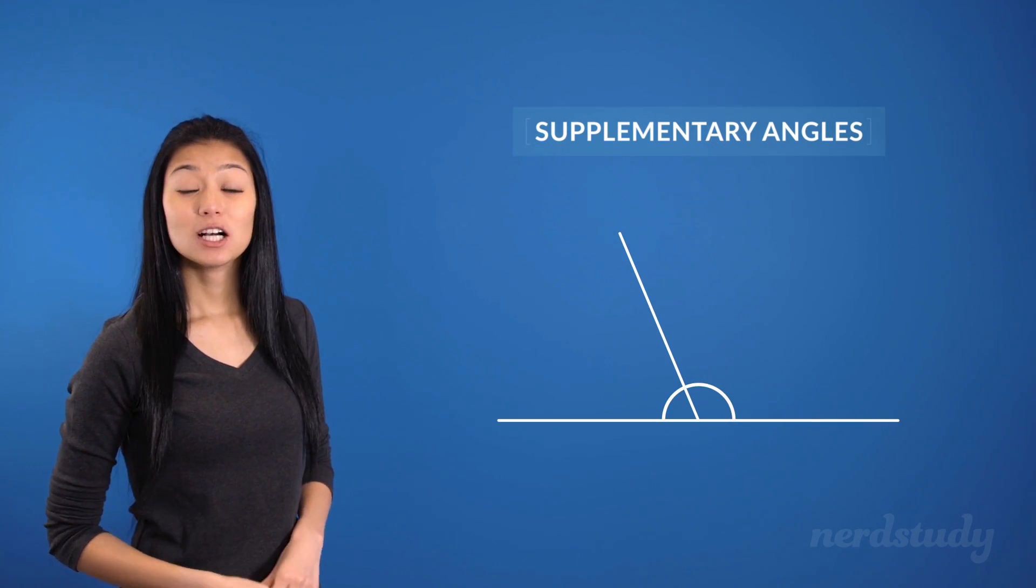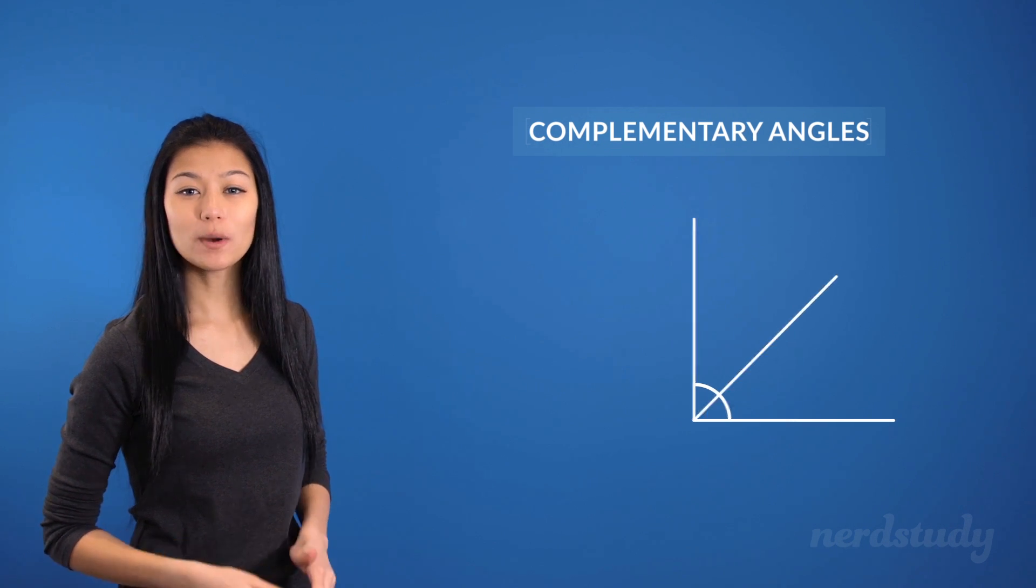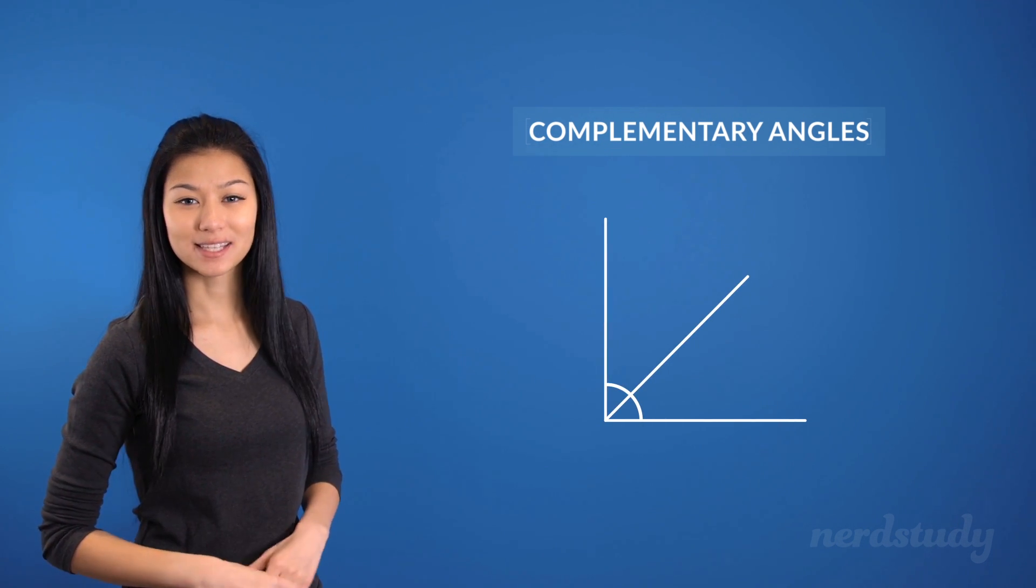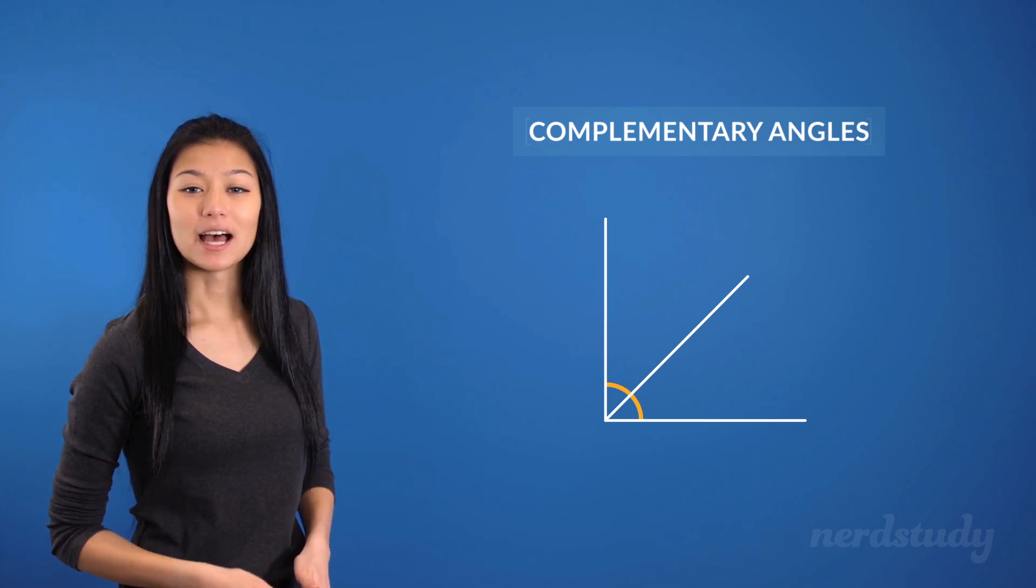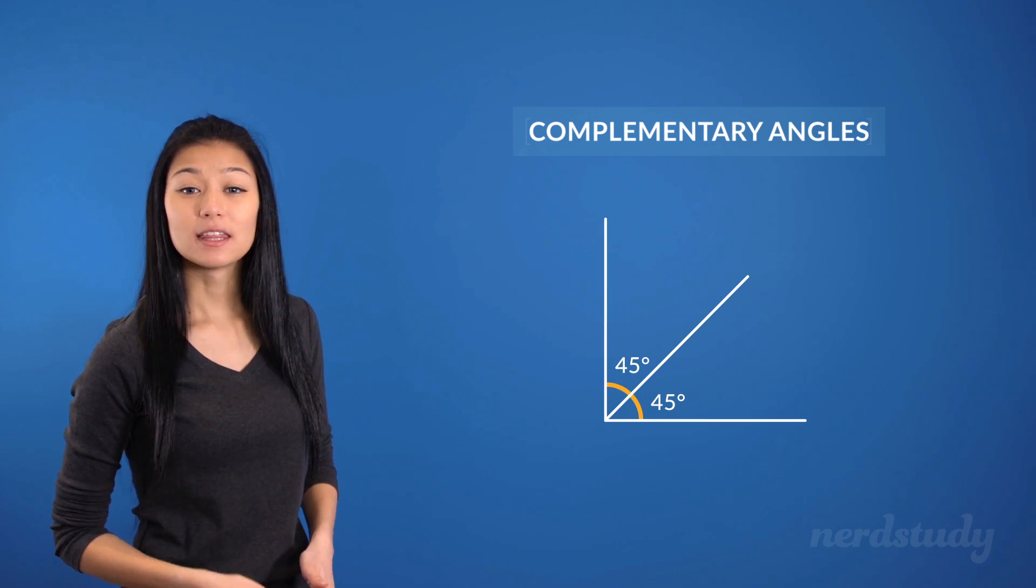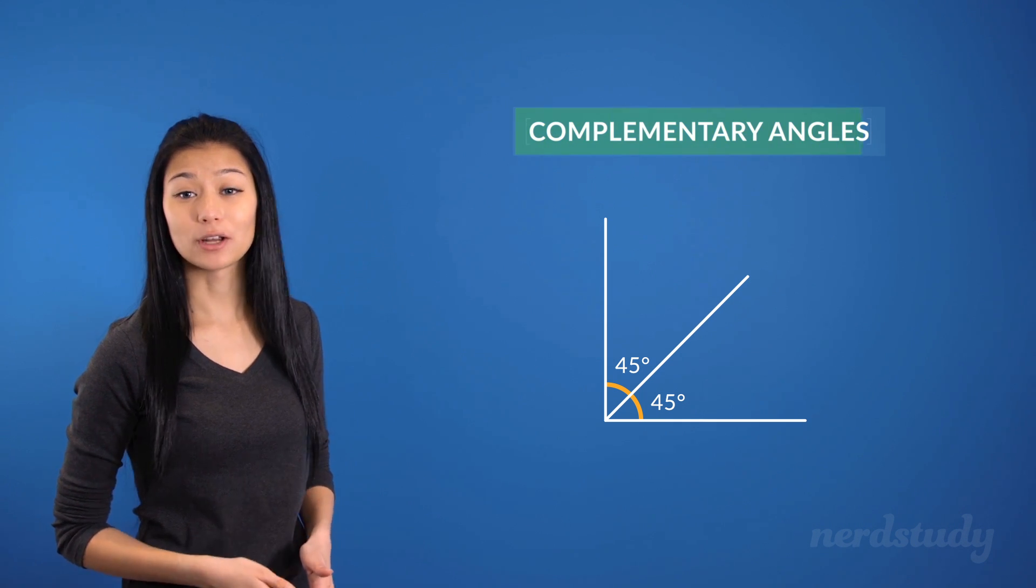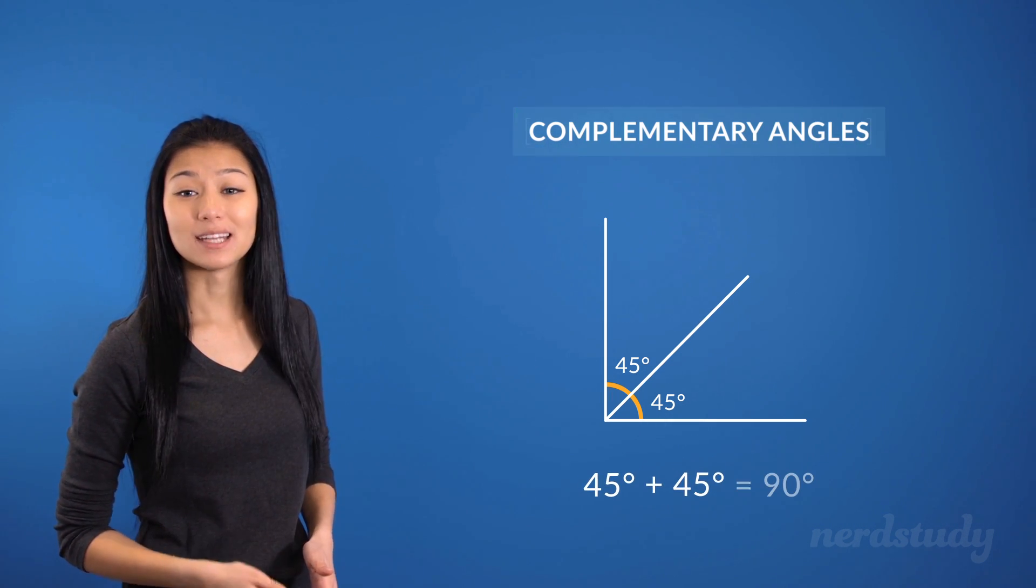In light of this idea, complementary angles always add up to be 90 degrees instead. So, in this case, if we had two angles here as 45 degrees each, then they would be considered complementary angles, since they add up to be 90 degrees.